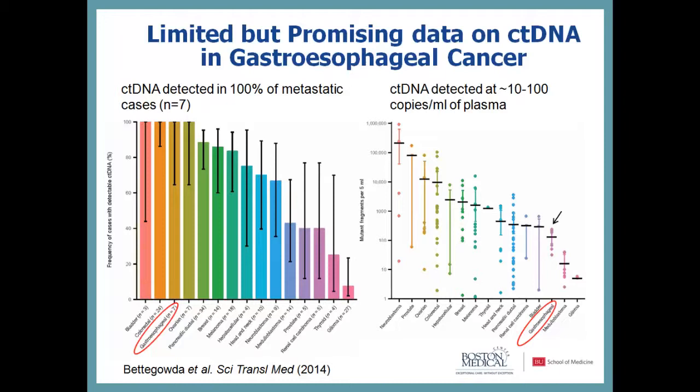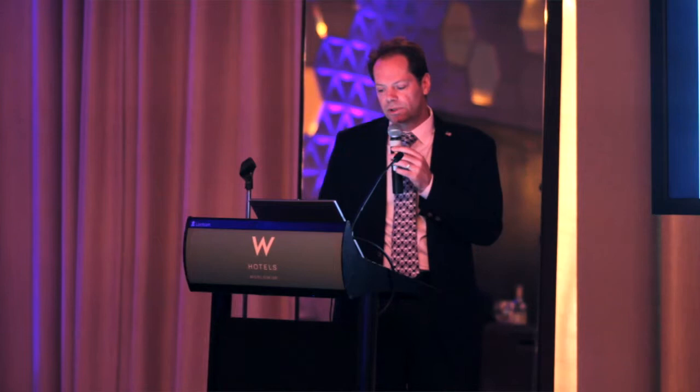In the seven patients with metastatic disease, 100% had detectable circulating tumor DNA in the plasma. The amounts were between 10 and 100 copies of tumor DNA per milliliter of plasma, which is not as high as for some other tumor types. When they looked at the earlier stage patients — only 14 of them — approximately 60% had detectable circulating tumor DNA. So 100% of the metastatic patients and 60% of earlier-stage patients — this is promising.